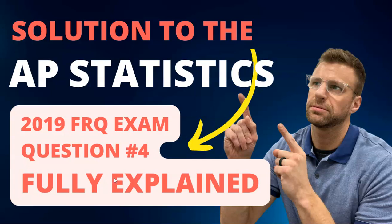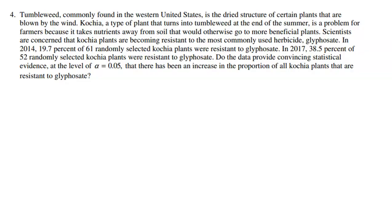In the 2019 AP Statistics FRQ exam, question number four was one of the toughest ones, but it should have been really easy. It was all about a test of significance between two proportions. Let's dive into it and walk through exactly how to do it.